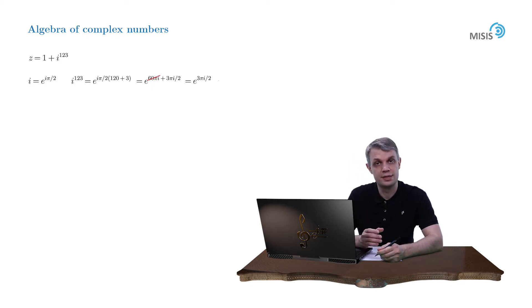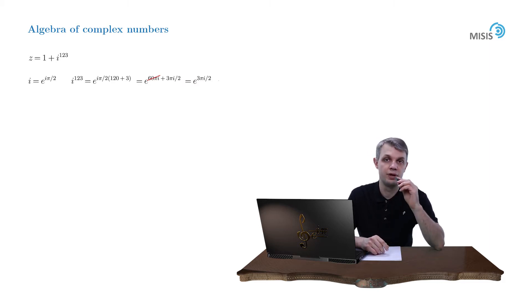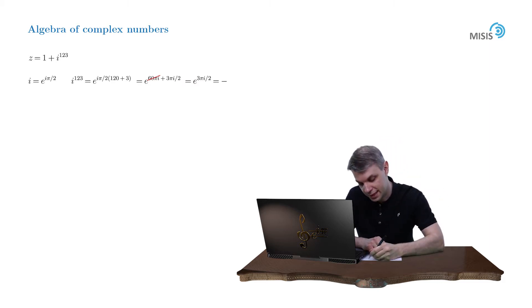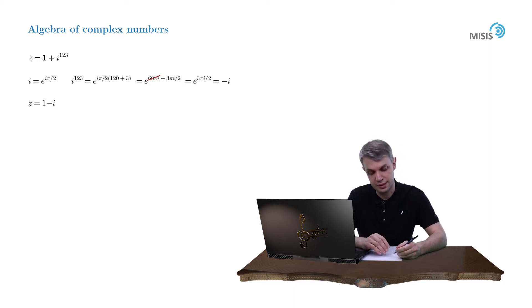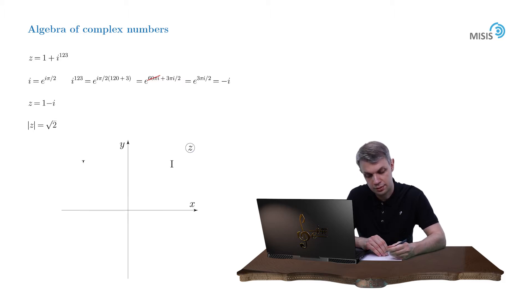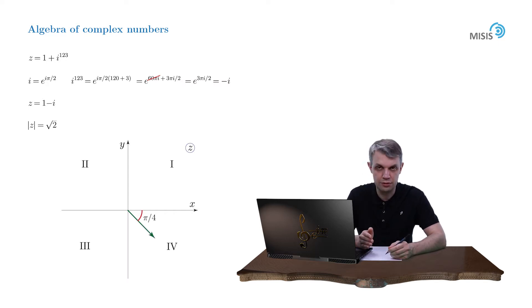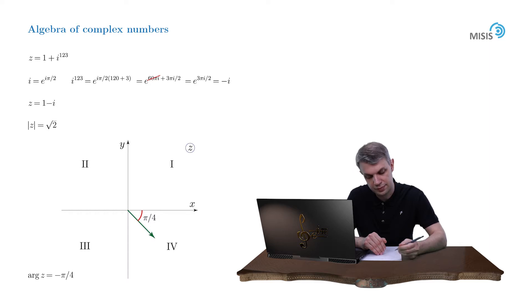This is a complex number with unit modulus but inclined by angle 3π/2, which is nothing but minus i. So this way we simplified our complex number and it became 1 minus i. Now it's trivial to find its modulus and argument. The modulus of z is obviously √2, while its argument — it's a number in the fourth quadrant inclined by 45°. So if we choose the argument belonging to the strip from -π to π, our argument will be equal to -π/4. And this way our complex number is represented as √2 · e^(−iπ/4).